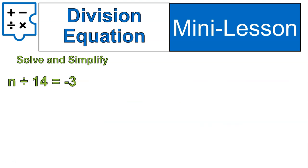I want you to try one division question. n divided by 14 is equal to negative 3. This one here is going to give us a little bit of a large number, and that's okay, but I want you to follow those same steps that I've reiterated in this lesson and in last week's lesson. You can do it. Go.